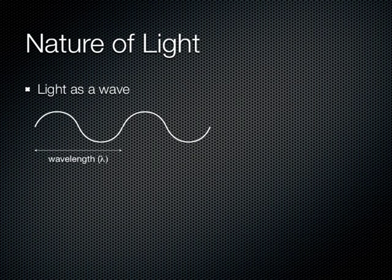There are two theoretical models for light. One model describes light as a wave of electromagnetic energy. Like any wave, it consists of an oscillation which repeats itself.